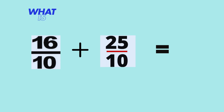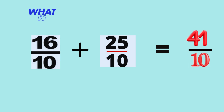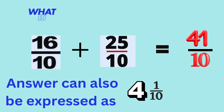Now that both denominators are the same, we can add the numerators to get our answer. Sixteen plus twenty-five is forty-one. So, the solution is forty-one-tenths. Now, forty-one divided by ten is four with a remainder of one. Therefore, forty-one-tenths can also be expressed as four and one-tenth if reconverted to mixed fractions. Both are acceptable solutions.